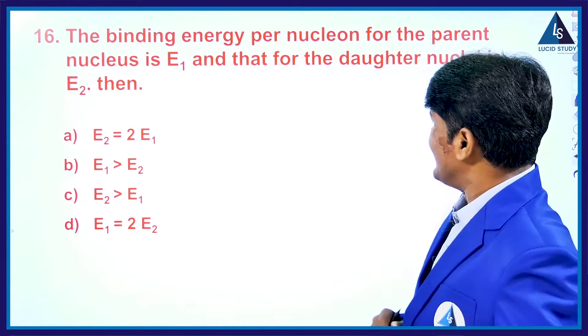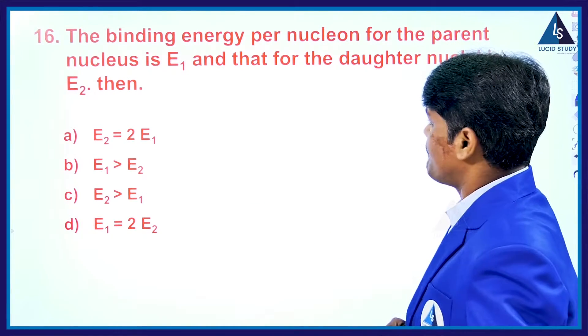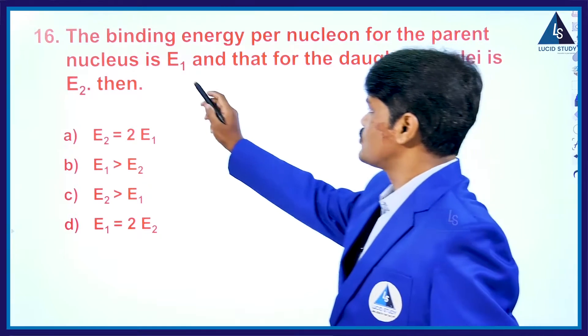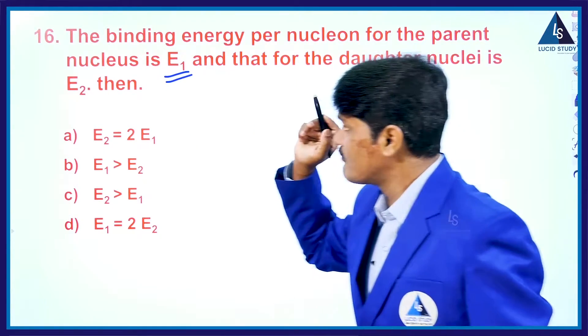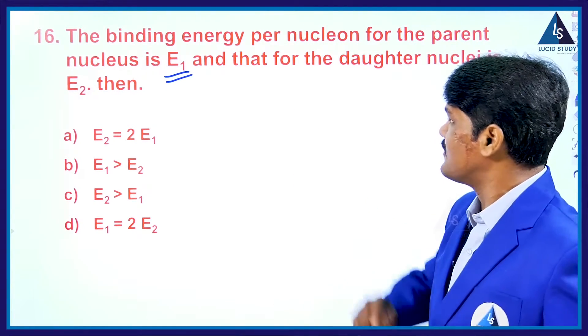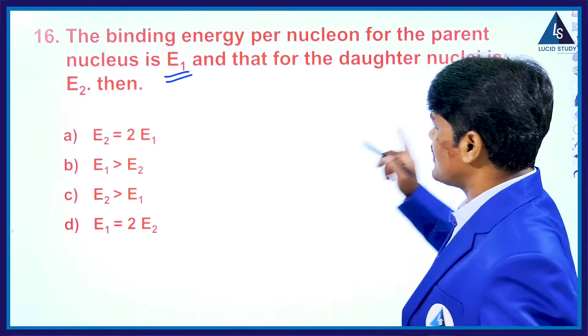This is our next question. The binding energy per nucleon for the parent nucleus is E₁, so binding energy per nucleon for the parent nucleus has been given which is E₁, and that for the daughter nucleus is E₂.